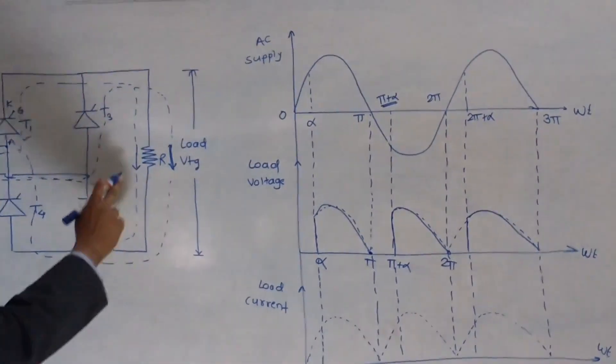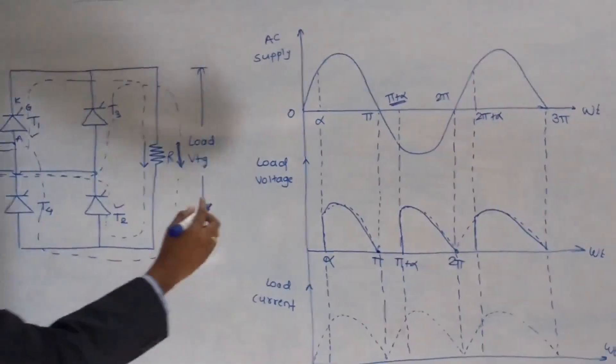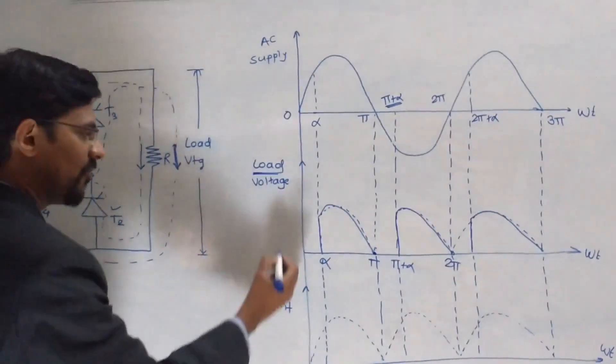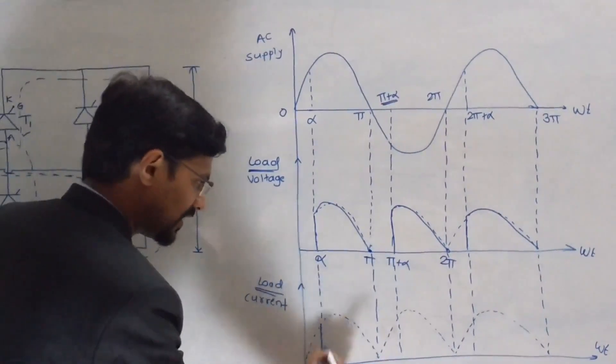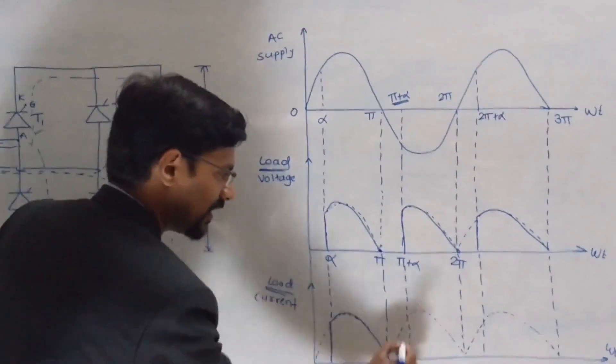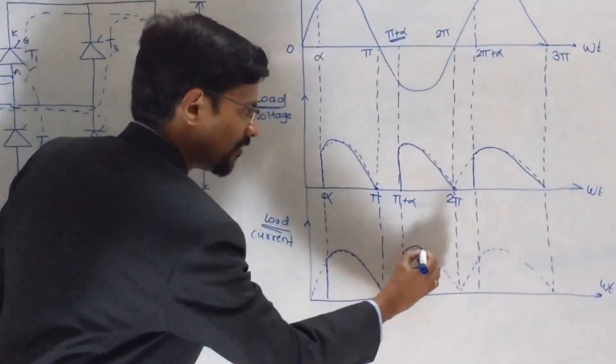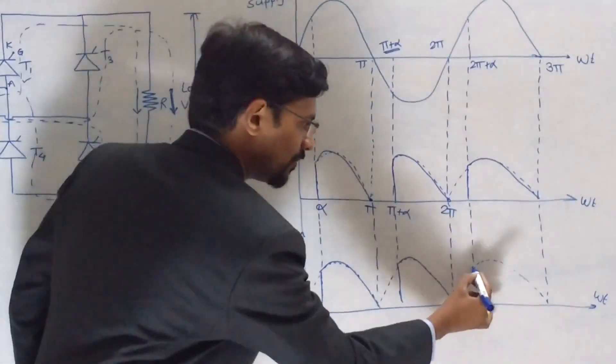And we are considering that this is an R-load. That's why load voltage waveform and current waveform will be exactly the same. So you will get the same nature for the output voltage and for the output current that is load current.